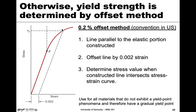We draw that offset line parallel to the elastic region and keep going until we find the point where it intersects our stress-strain curve. The stress value at that intersection is our yield strength. So we draw a line parallel to the elastic portion, offset by 0.002 strain, then determine the stress value where that intersects the curve. This method applies to most plastic materials that don't exhibit the yield point phenomenon.